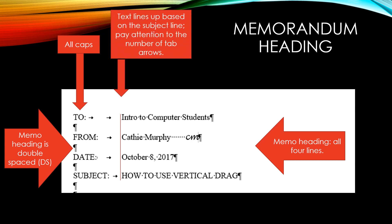The information under each of the subject lines — each of these lines are lined up based on the subject line. Pay attention to the number of tab arrows. That is why you have to have your formatting marks on so that you can see how to line these up. You start with your subject line and hit the tab key once, then work upward to your Date, From, and To, lining up each of these with the subject line.